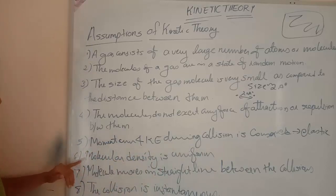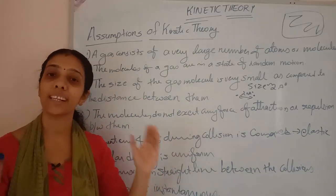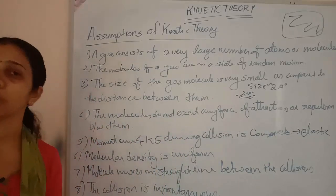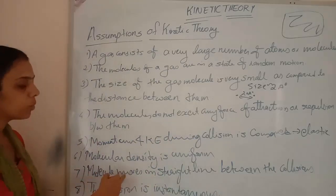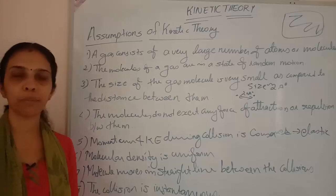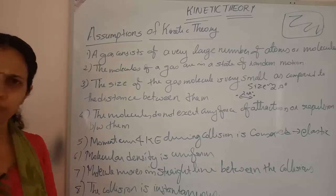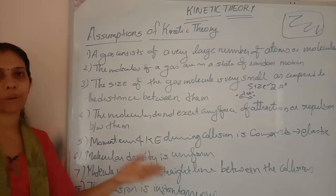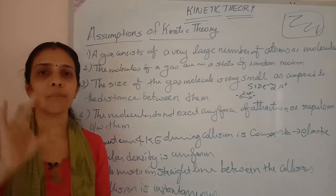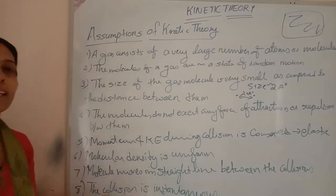The next assumption is that molecular density is uniform — the distance between molecules inside a container is approximately the same. Molecules also move in a straight line between collisions, which relates to the mean free path — the minimum distance traveled before a collision. Finally, collision is an instantaneous process, happening within a fraction of a second.